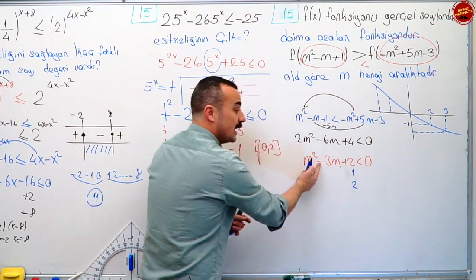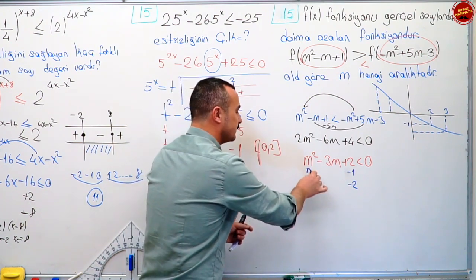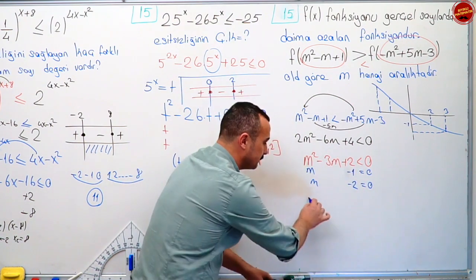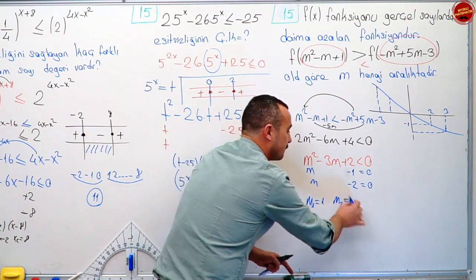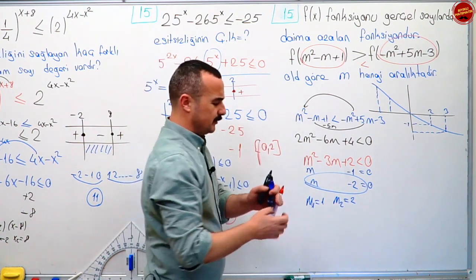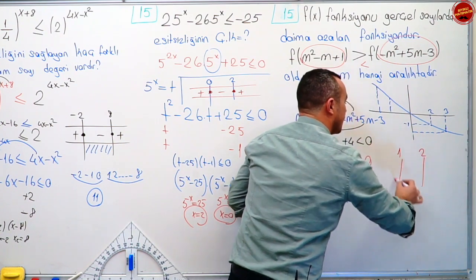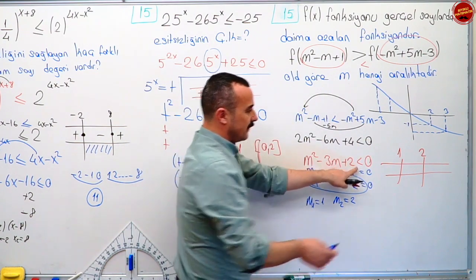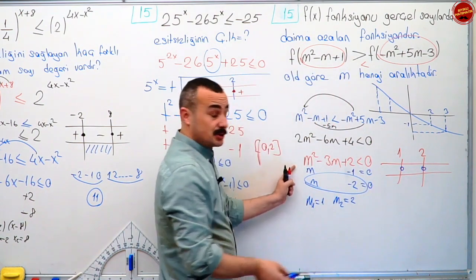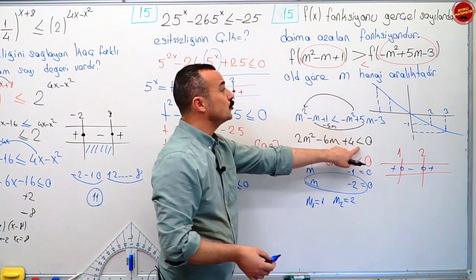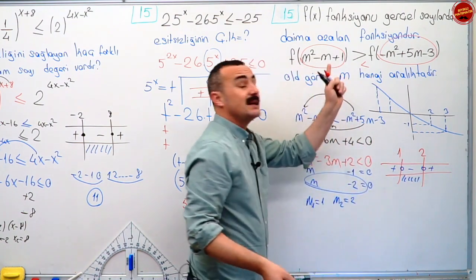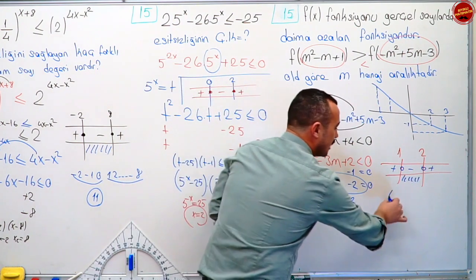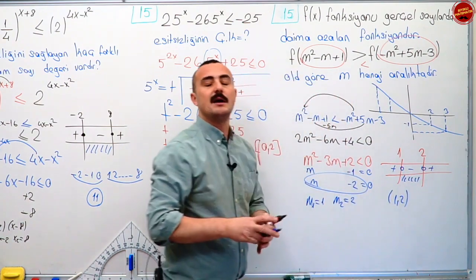M kare eksi üç m artı iki küçükmüş sıfırdan. Çarpandan ayırıyorum: bir ile ikinin çarpımı eksi üçü verebilmesi için toplamların her ikisine de eksiyi verdim. Bunu sıfır yapan değer birinci köküm bir, ikinciyi sıfır yapan m eksi ikiyi sıfır yapan değerim iki. Tablomu yapıp bitiriyorum. Birinci köküm bir, ikinci köküm iki. Eşitlik yok, içleri boş. En büyük dereceli terimin işareti artı. Artı, eksi, artı. Sıfırdan küçük olduğu aralık: m'nin bir ile iki açık aralığında olması gerekiyormuş.